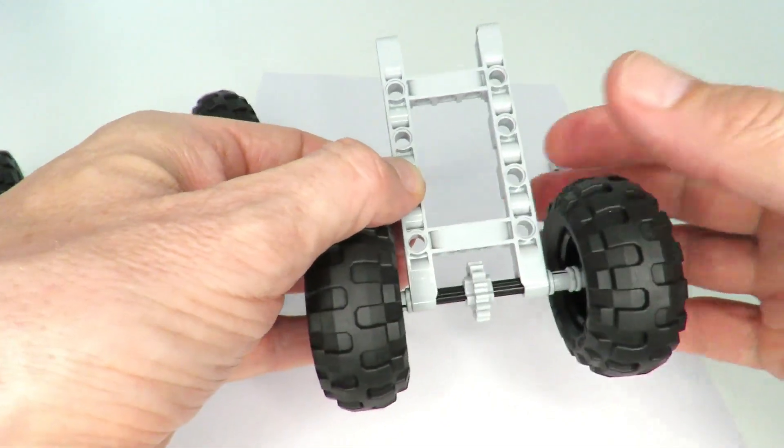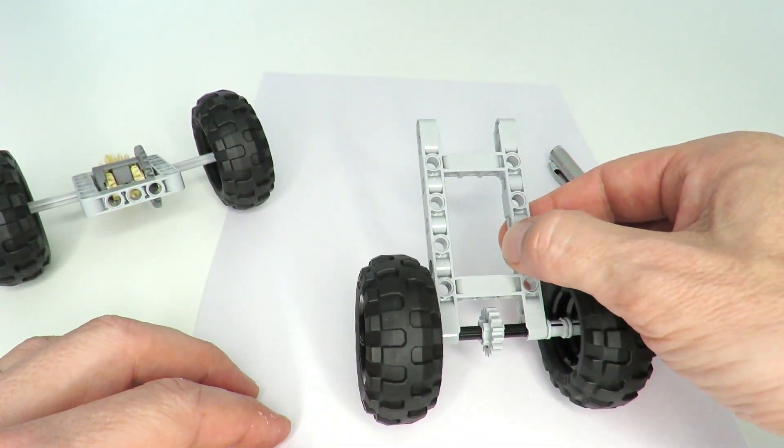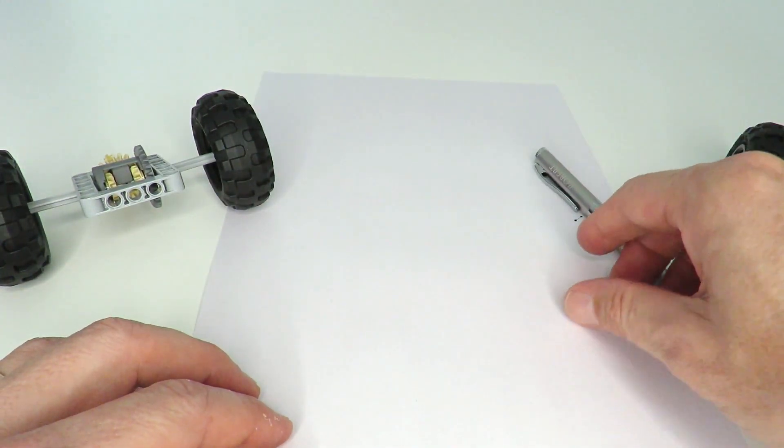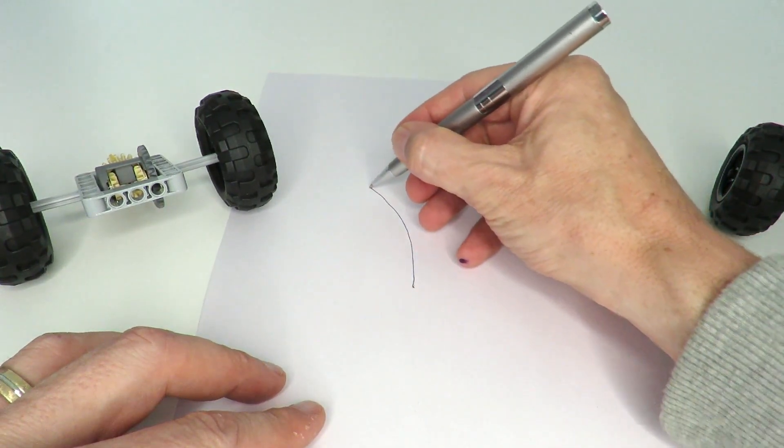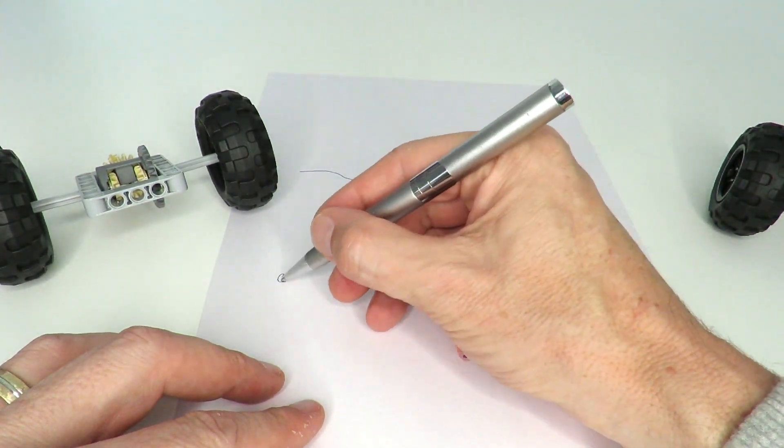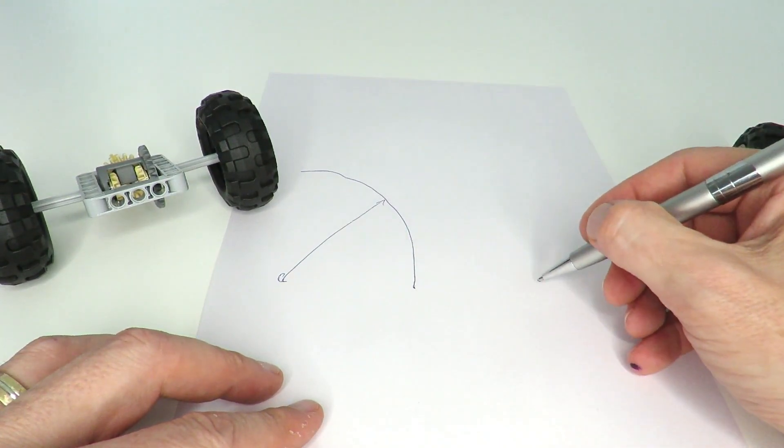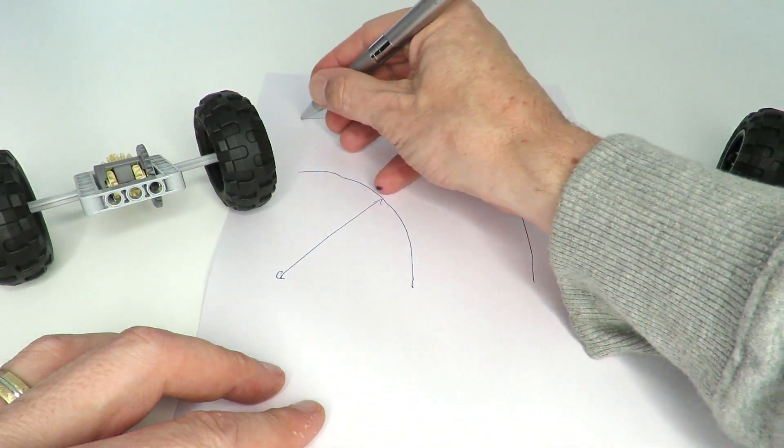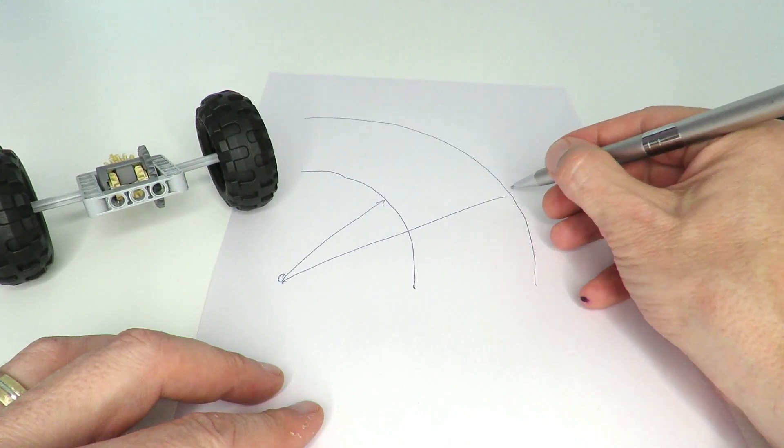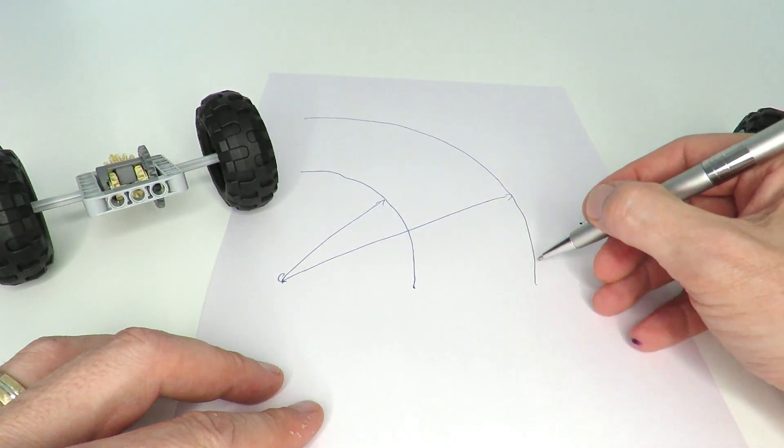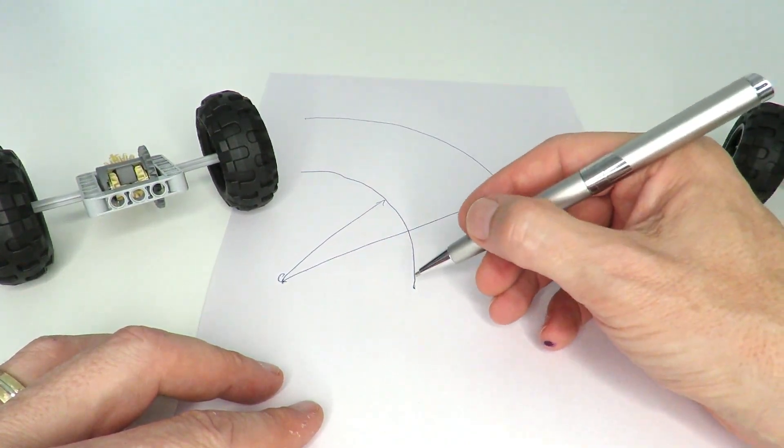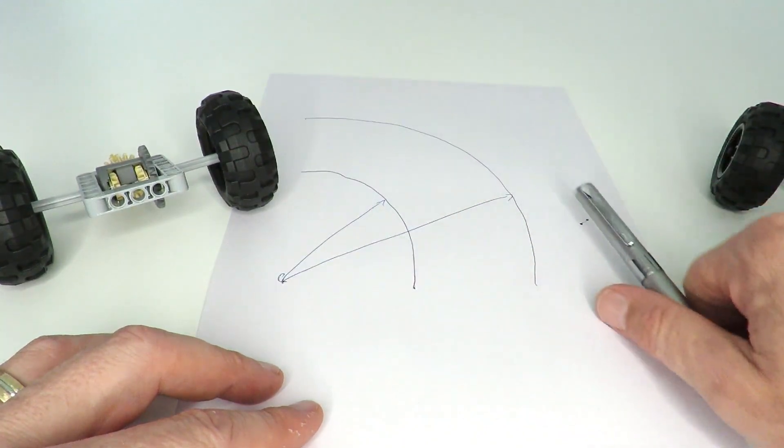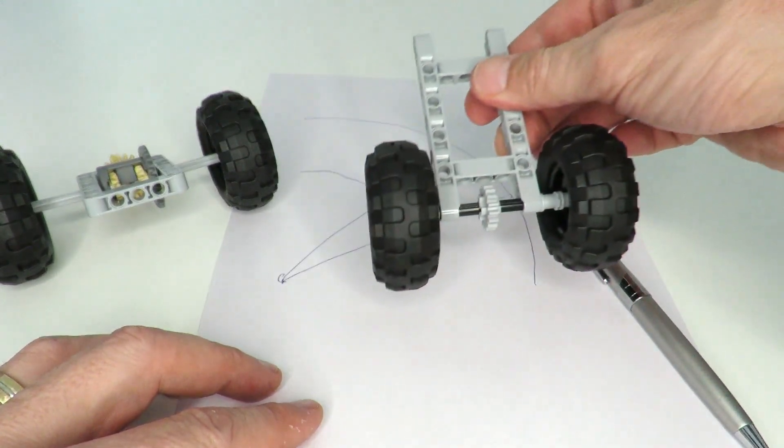For example, if we draw that on a piece of paper, we've got our inner arc going around the corner with this kind of radius, and then we've got the outer arc going around the corner with a larger radius. The distance around the outside is a lot longer than around the inside.